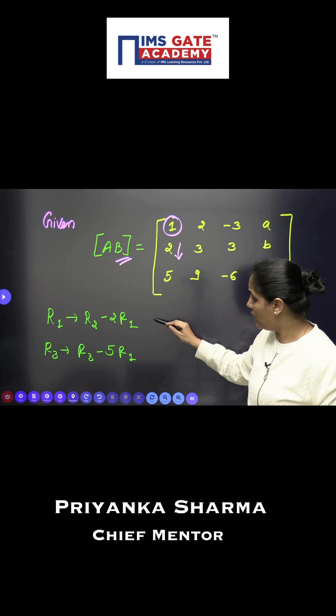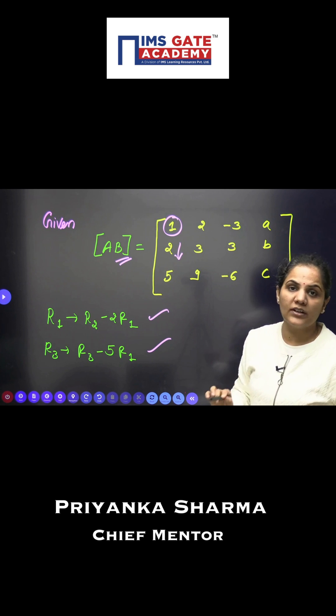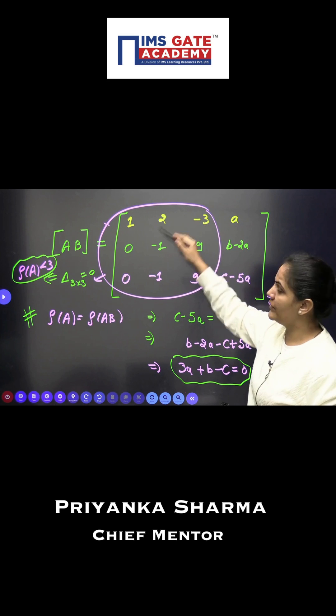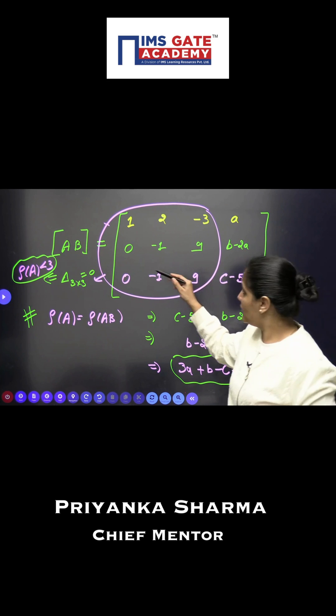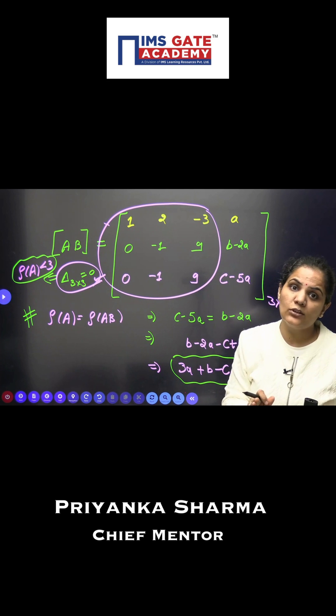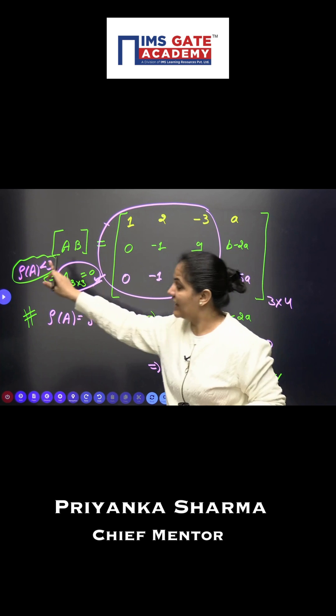I will apply these two basic row transformations. When I approach here, I can see that the last two rows of the very first minor are identical. So when I get the minor value, the value of this first 3×3 minor is zero. Hence, the rank of matrix A is less than three.